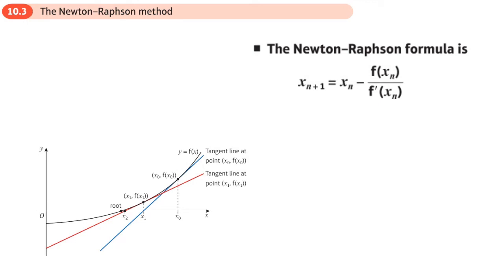This is the third section of the numerical methods chapter, and this is the Newton-Raphson method. In the previous questions we did, you were given the iteration formula. What Newton-Raphson is, is a way that you can make your own iteration formula, and this is the rule to make your own Newton-Raphson formula.